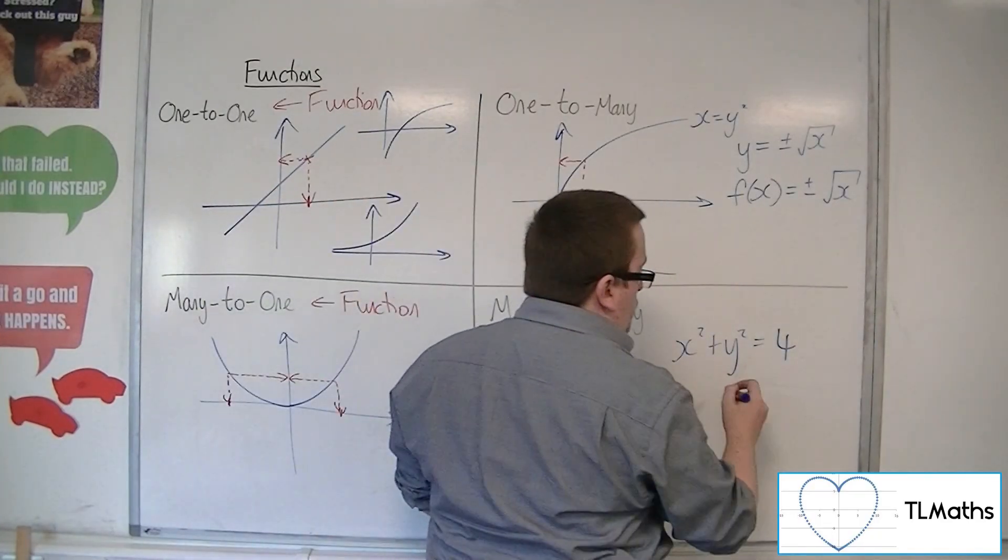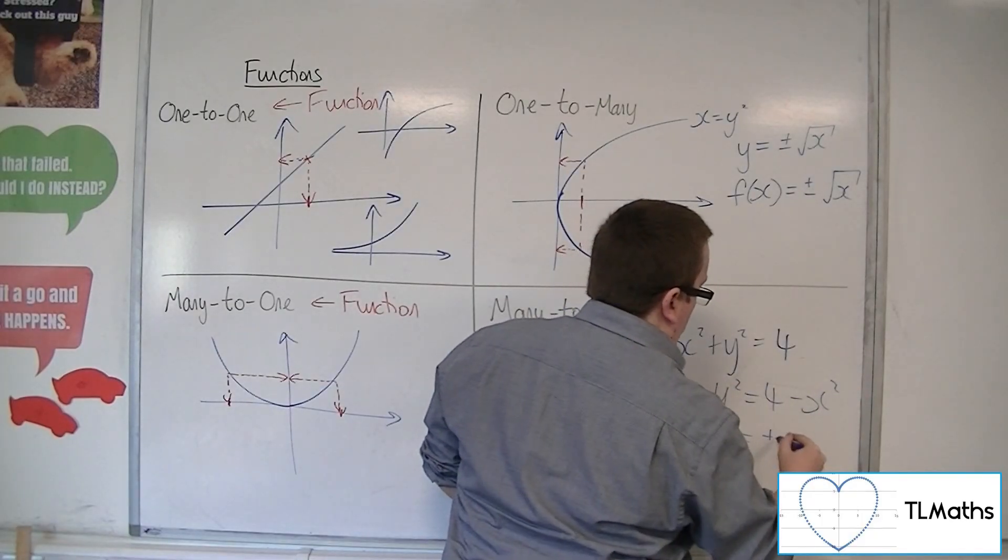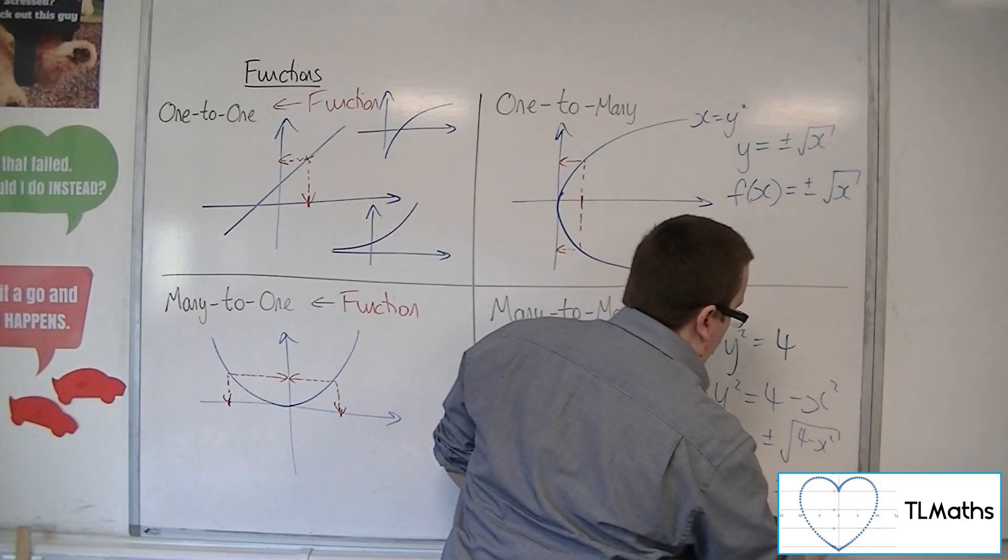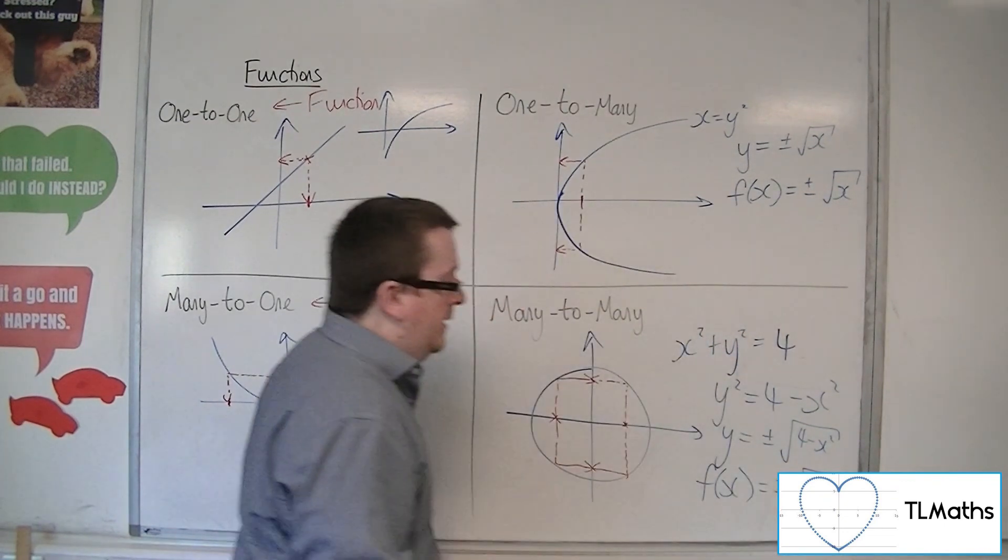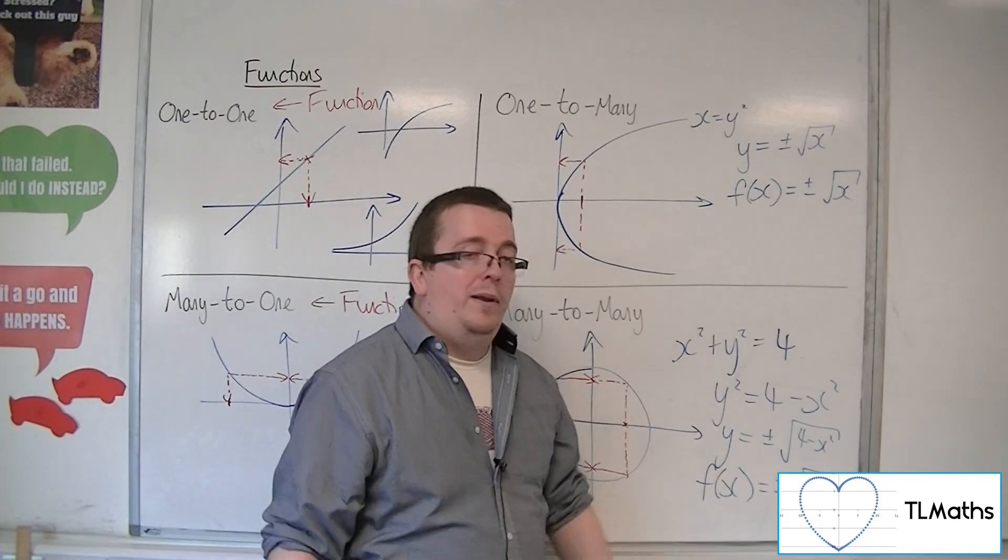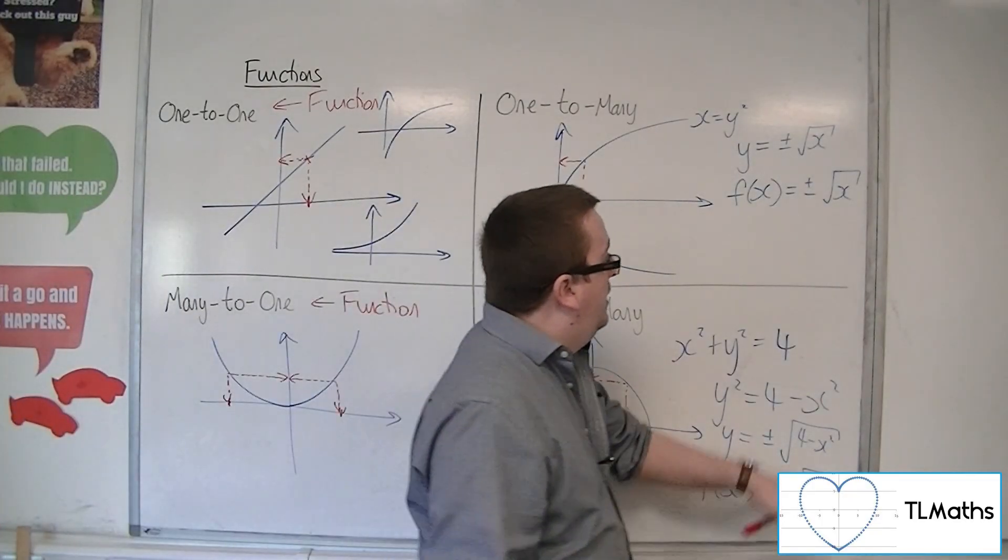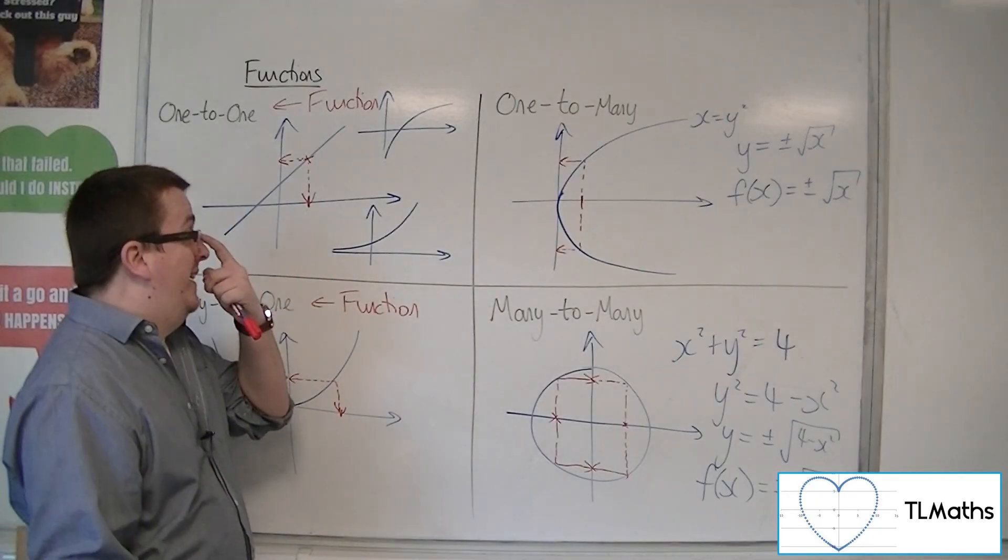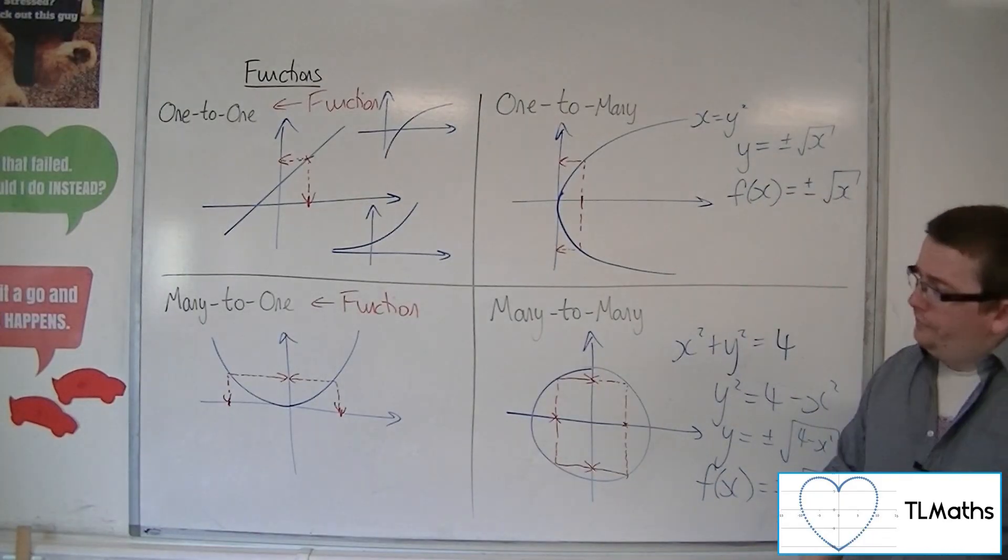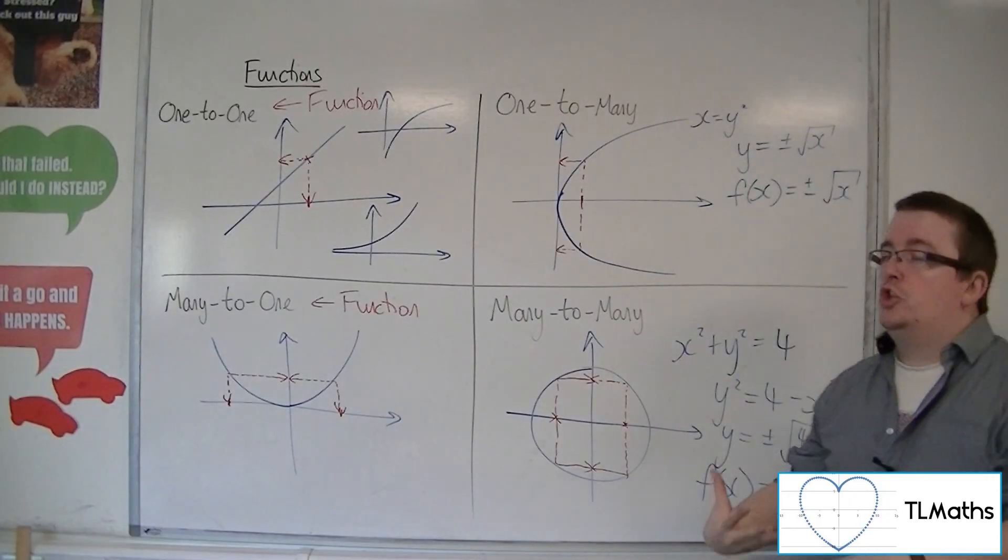In exactly the same way, if I rearrange this, y squared equals 4 minus x squared. So y is equal to plus or minus the square root of 4 minus x squared. I could write that in function notation like that, but the problem is that this isn't a real function because of that plus minus being involved. That is why we try to avoid these plus minuses when we're writing in function notation. This is how you look at functions and what these one-to-one, many-to-one, one-to-many and many-to-many actually mean.